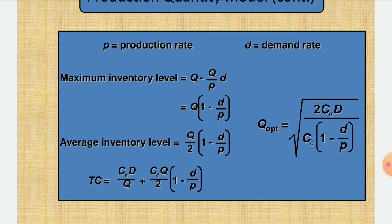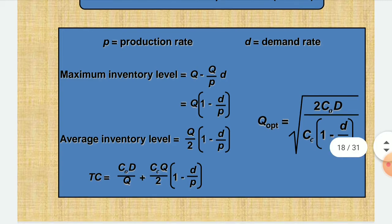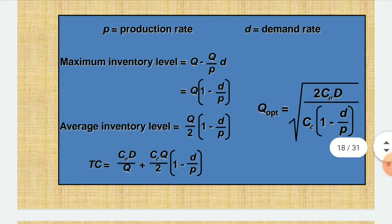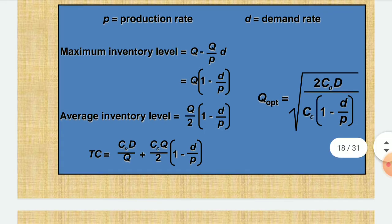The maximum inventory level is Q = Q(1 − D/P). The average inventory level is Q/2 × (1 − D/P). The total cost is equal to C_O × D / Q + C_C × Q / 2 × (1 − D/P), which extends the EOQ formula by incorporating the production-to-demand ratio.